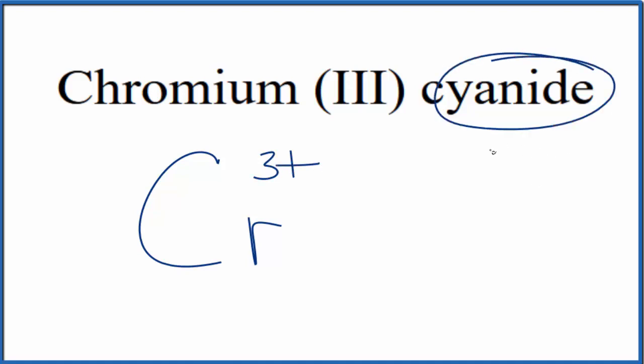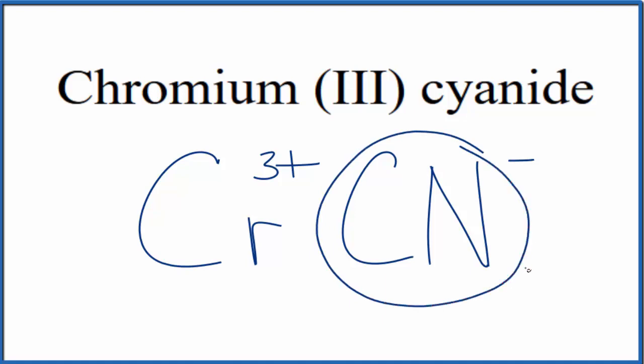Cyanide, this isn't on the periodic table, this is a polyatomic ion. So you either memorize that the cyanide ion is CN-, or if you're allowed you look it up on a table of polyatomic ions. And the negative sign here, this goes to the whole cyanide ion.